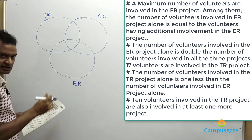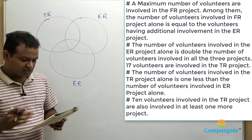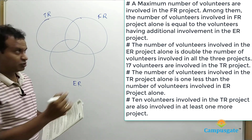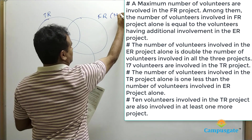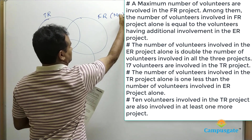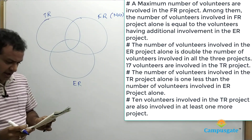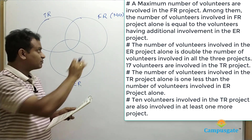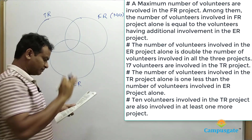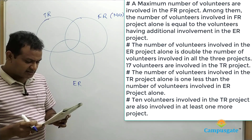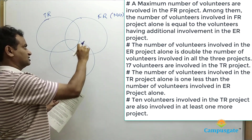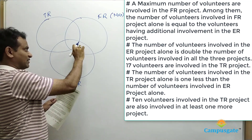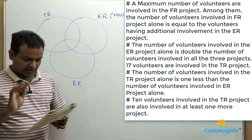Let us look at clue number 1. The maximum number of volunteers are involved in the FR project. Among them, the number of volunteers involved in FR project alone is equal to the number of volunteers having additional involvement in the ER project. That means this region's value is equal to the sum of those two values. Let us keep that aside.